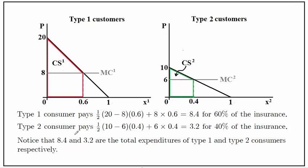Notice that 8.4 and 3.2 are the total expenditures of type 1 and type 2 consumers respectively — these are not per-unit prices. So the answer to this question is: type 1 consumer will consume 60% of the coverage and pay 8.4, and type 2 consumer will pay 3.2 for 40% of the insurance coverage.